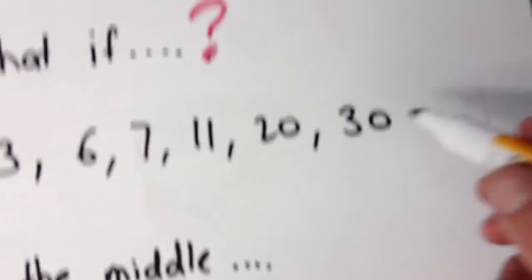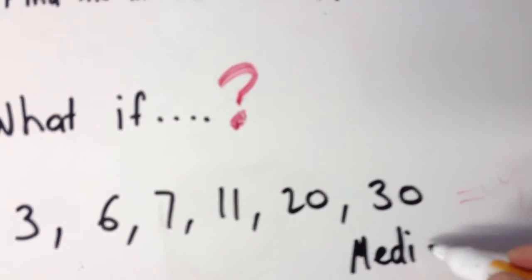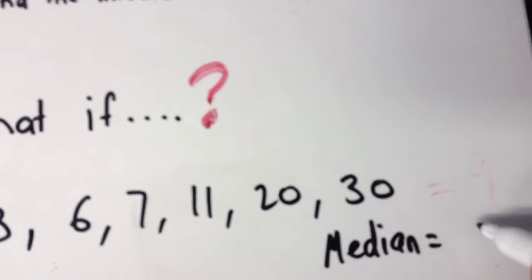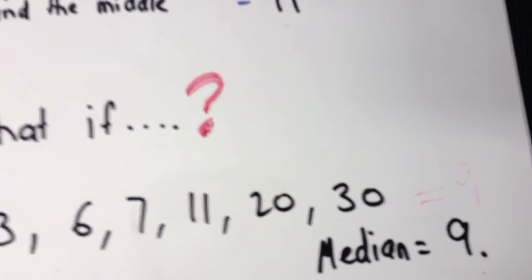So therefore the median of this set of numbers is 9. And that's how you do it.